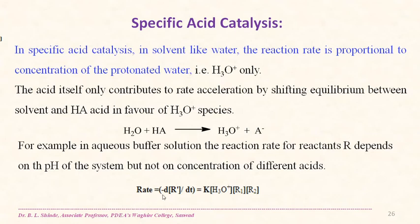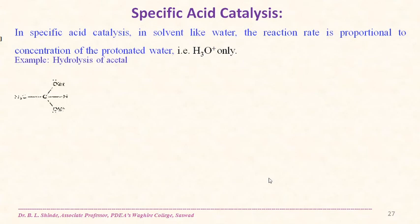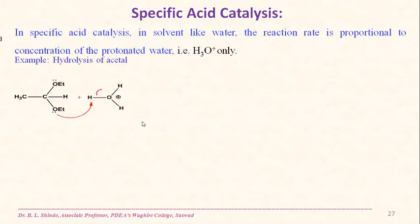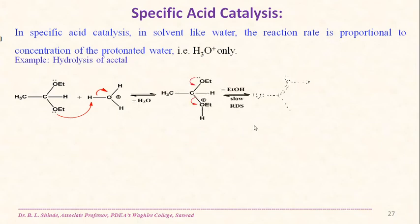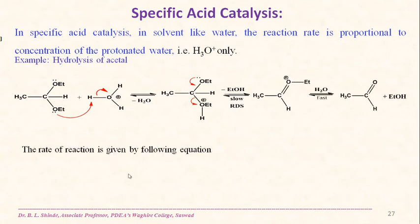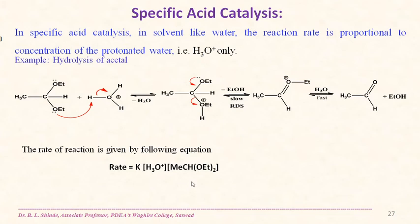For example, in an aqueous buffer solution the rate of reaction depends on the pH of the system but not on the concentration of different acids: rate = k[H₃O⁺][R₁][R₂]. An example is the hydrolysis of an acetal: when acetal undergoes hydrolysis in strongly acidic aqueous medium, protonation occurs in the rate-determining step. The rate is given by rate = k[H₃O⁺][acetal]. This is an example of specific acid catalysis.